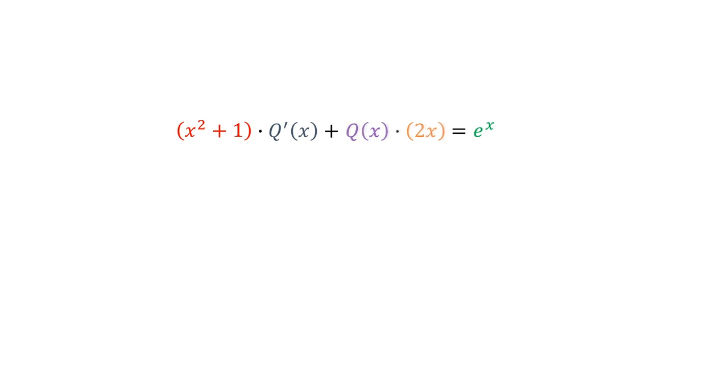First, we'll subtract the second term from both sides, and then tidy this up a bit, and then divide both sides by x squared plus 1. And now q prime of x is equal to e to the x minus q of x times 2x divided by x squared plus 1.